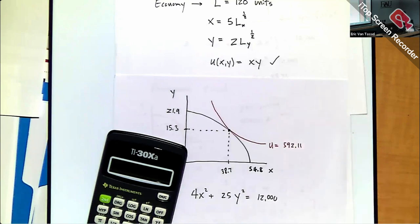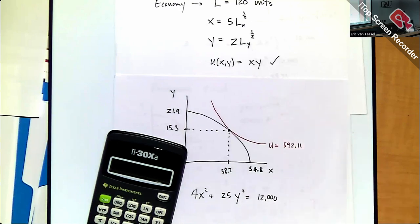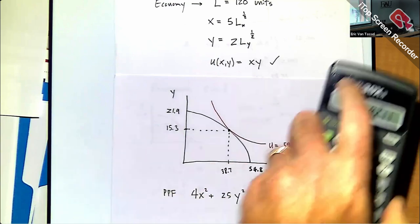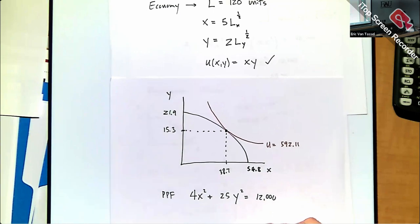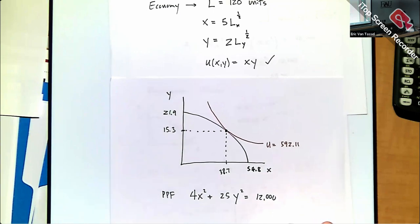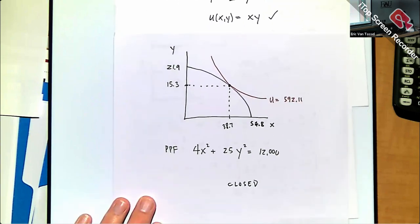Utility in the closed economy is U = X × Y = 38.7 × 15.3 ≈ 592. This is the indifference curve we land on in the closed economy — this is our benchmark.